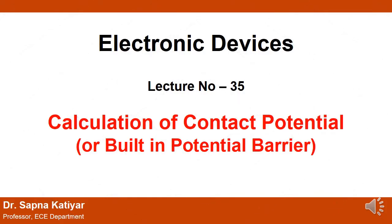Welcome to the video lecture series of electronic devices. Today's topic is calculation of contact potential or built-in potential barrier. Due to the presence of immobile positive and negative ions on opposite sides of the junction, an electric field is created across the junction, and this electric field is known as barrier potential, junction potential, or cut-in voltage. Let us begin.